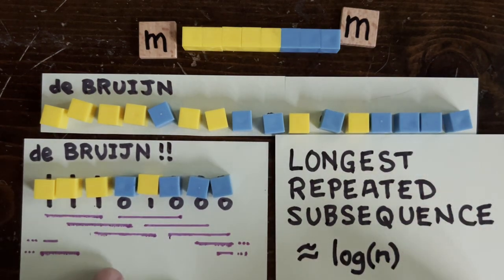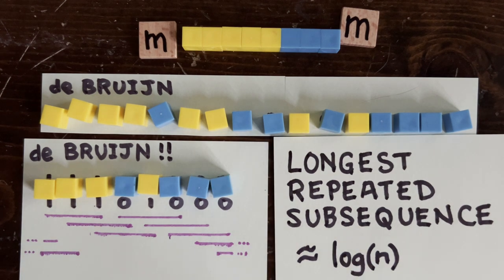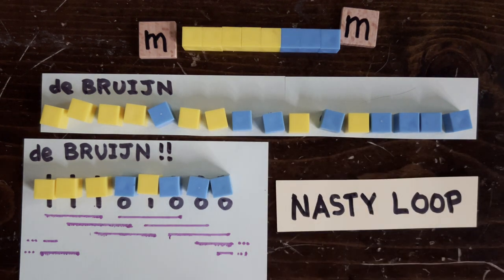In a de Bruijn sequence of length n, the longest repeated subsequence has length that's logarithmic in n, and that's way less than half of n. So a de Bruijn sequence kind of poses the toughest case for our no integer 3n plus 1 proof so far.